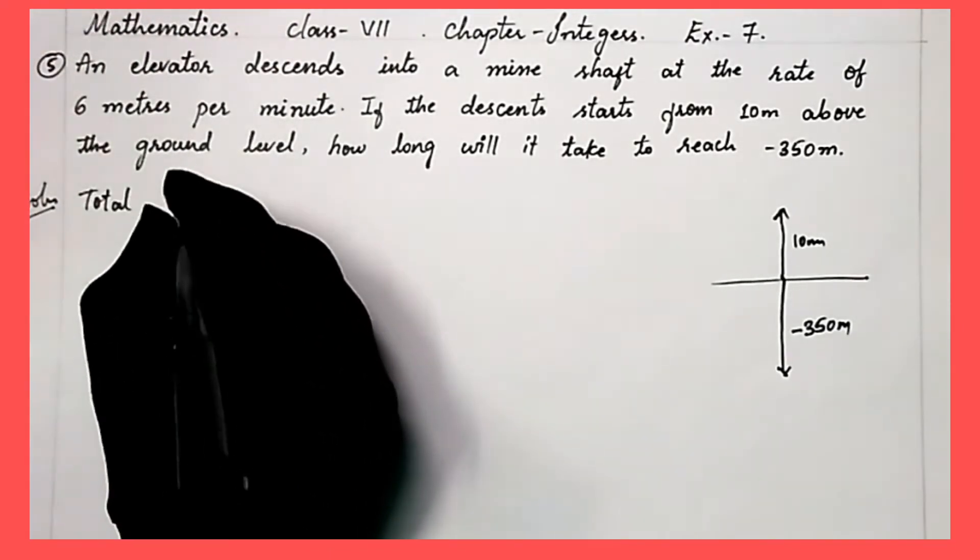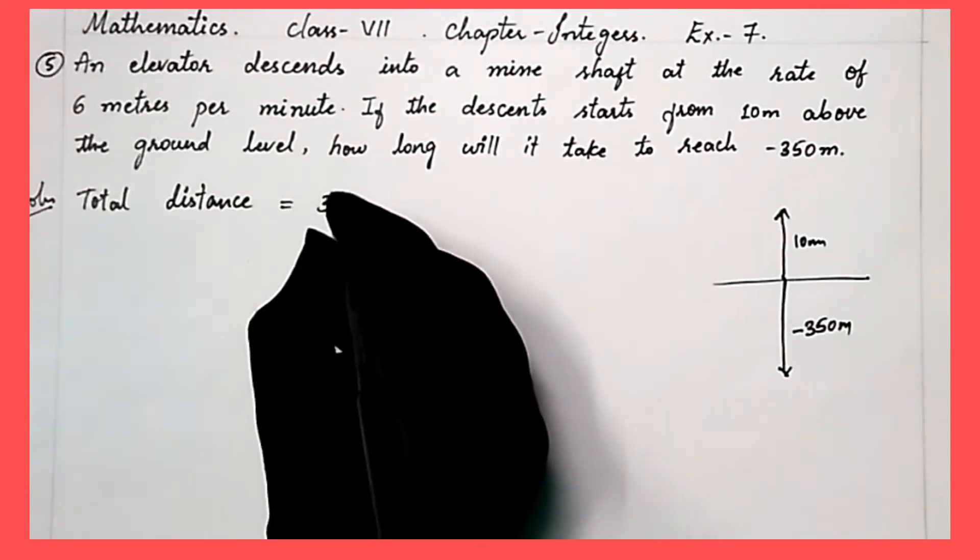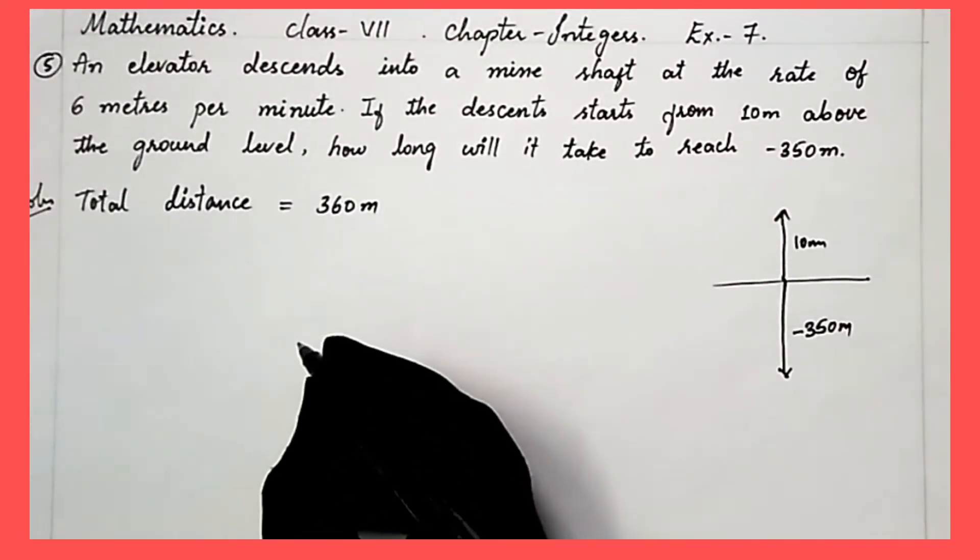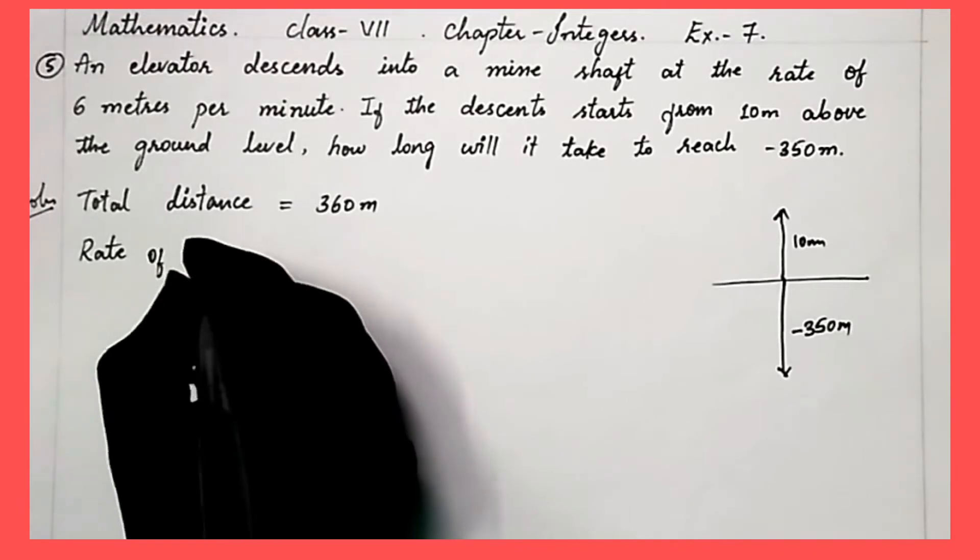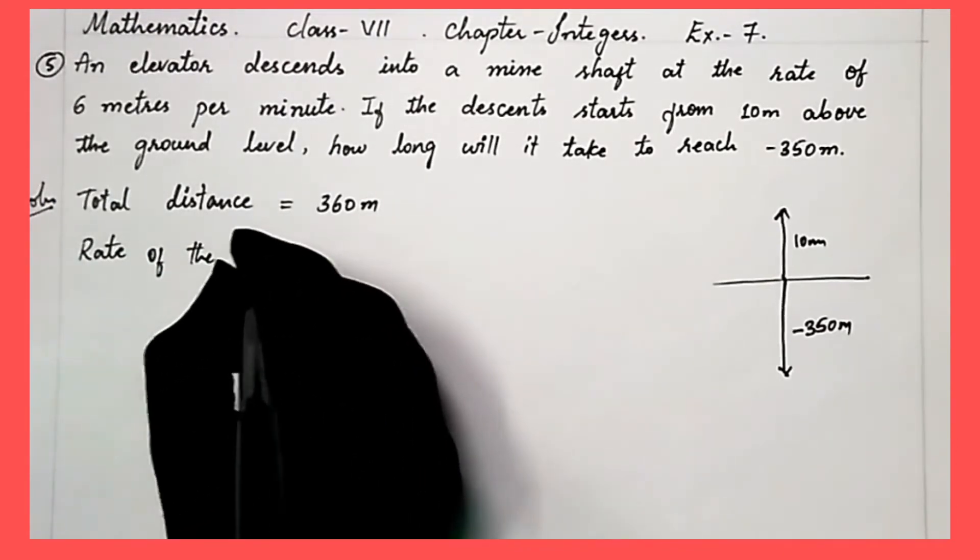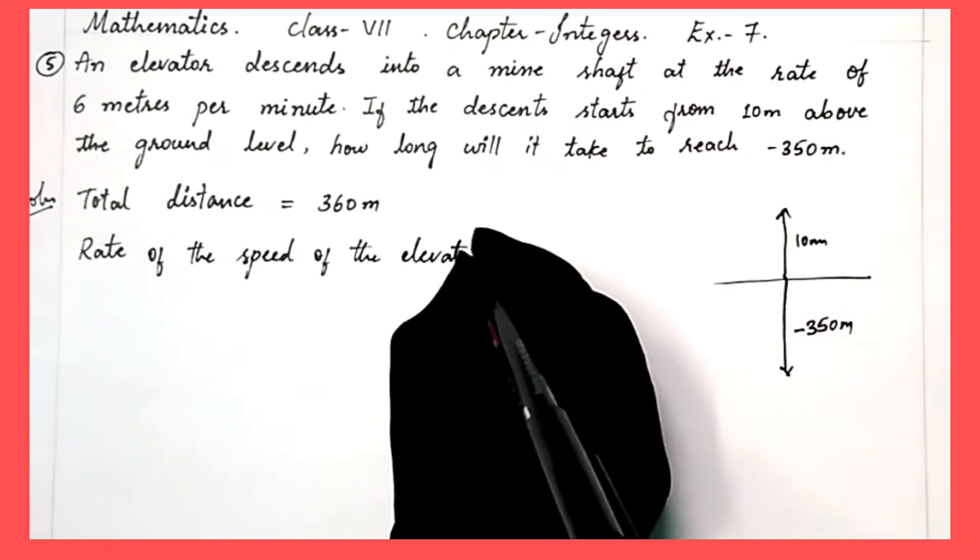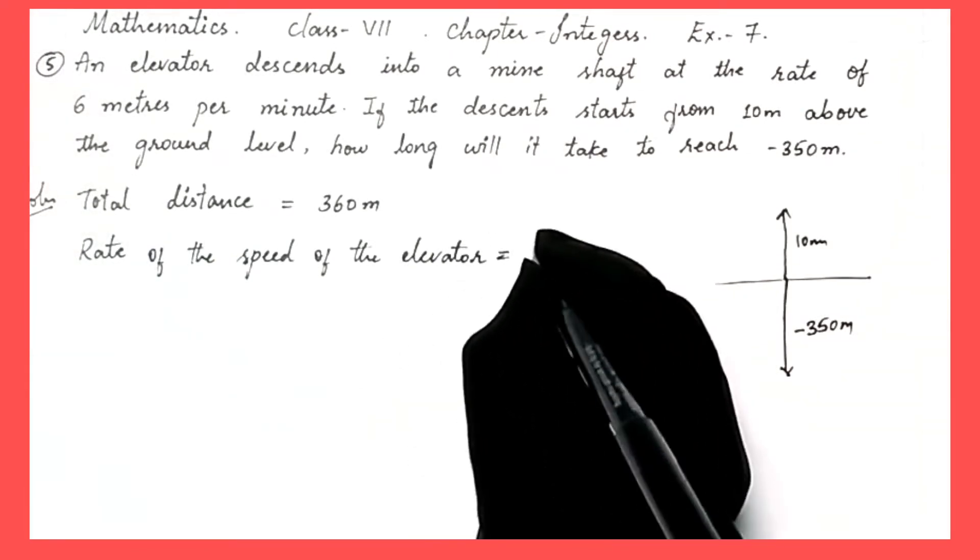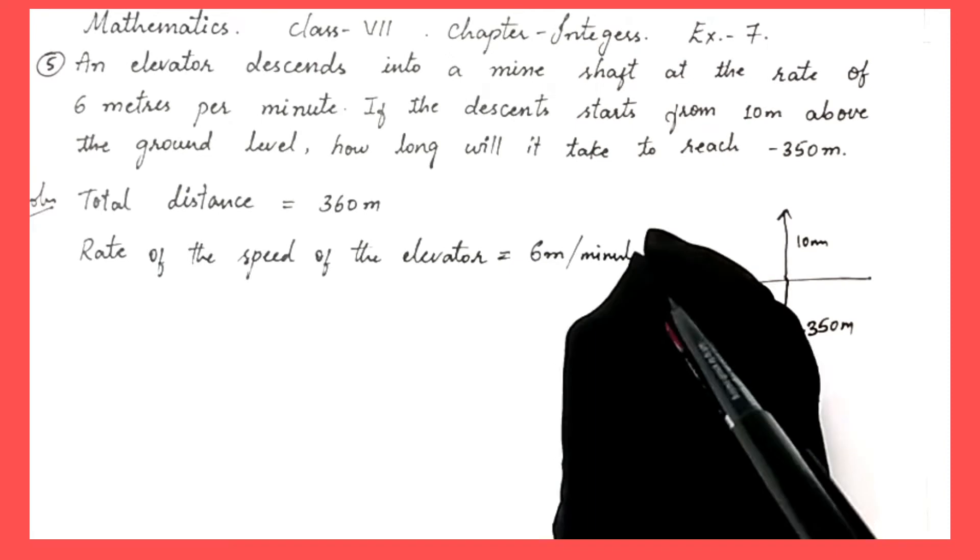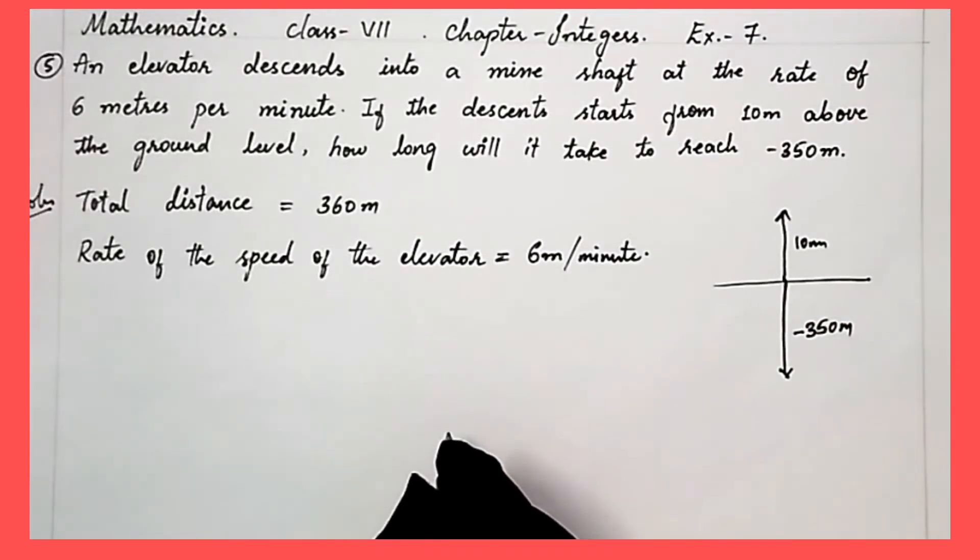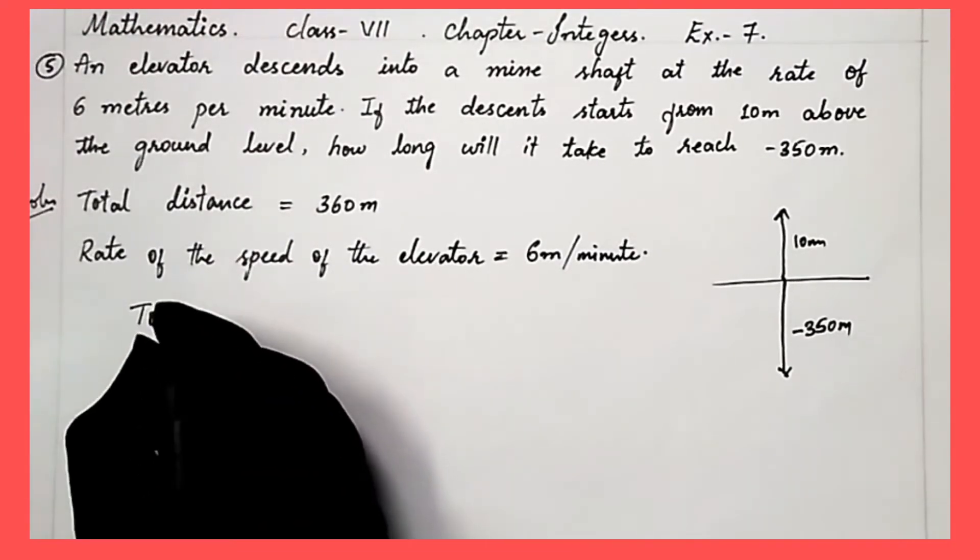So total distance is equal to 360 meters, and the rate of speed of the elevator is equal to 6 meters per minute. So we have to find out the total time taken by the elevator.